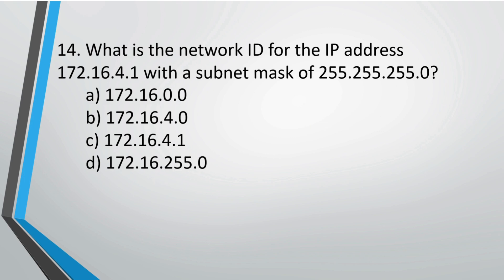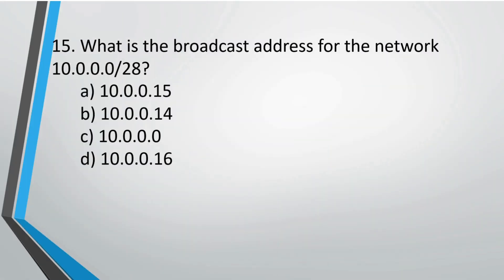Question 13: What is the network ID of the IP address 172.16.4.1 with a subnet mask of 255.255.255.0 (Class C)? The correct option is B, and the network ID is 172.16. Question 14 and 15: The broadcast address for the network 10.0.0.0/28 is 10.0.0.15, so option A is correct.